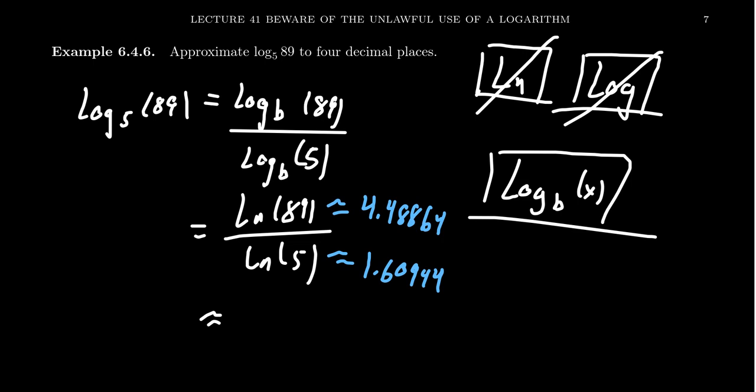And then if you take the ratio of those two numbers together, again, on your calculator screen, you'll get approximately 2.7889. Of course, rounding to four decimal places right there.